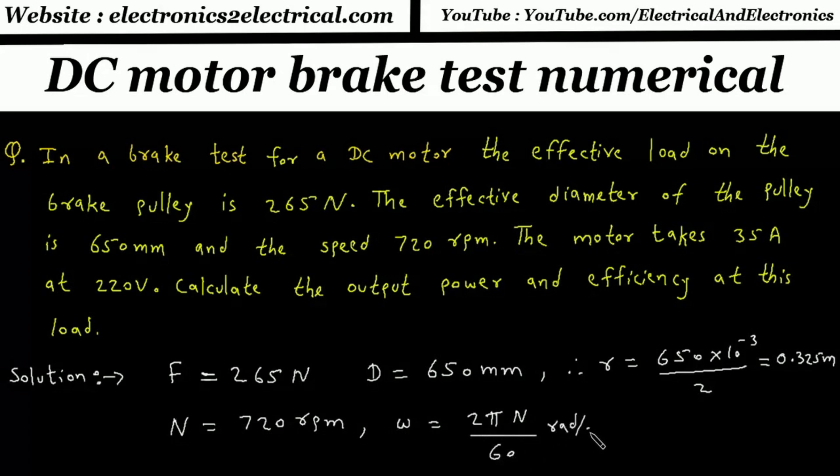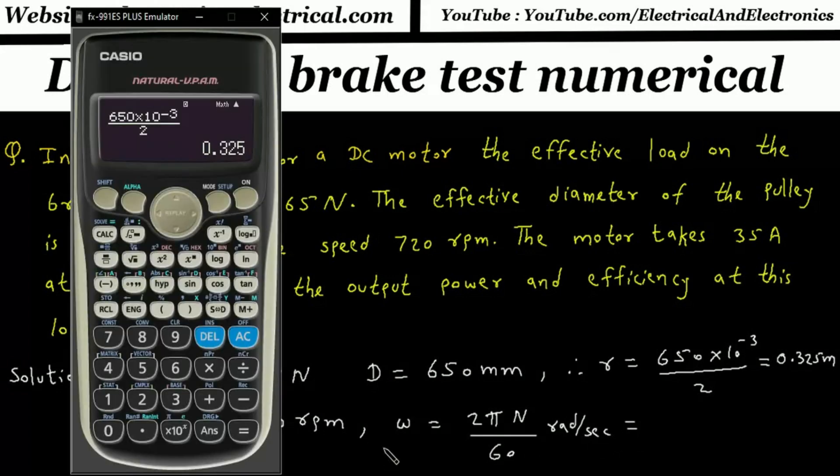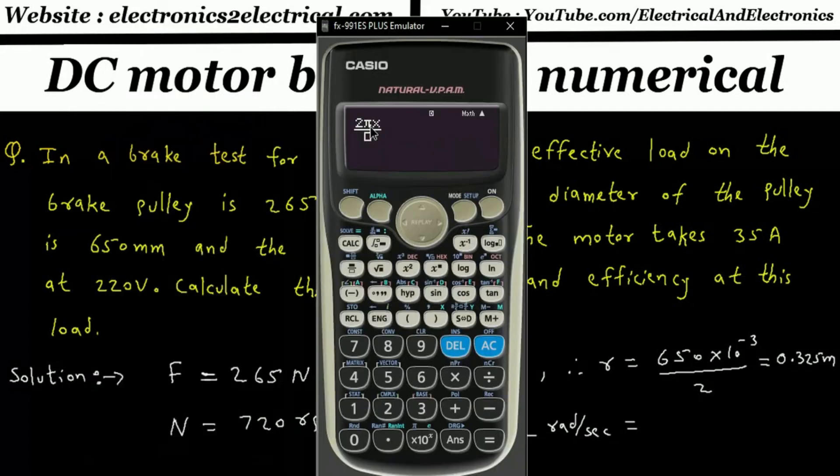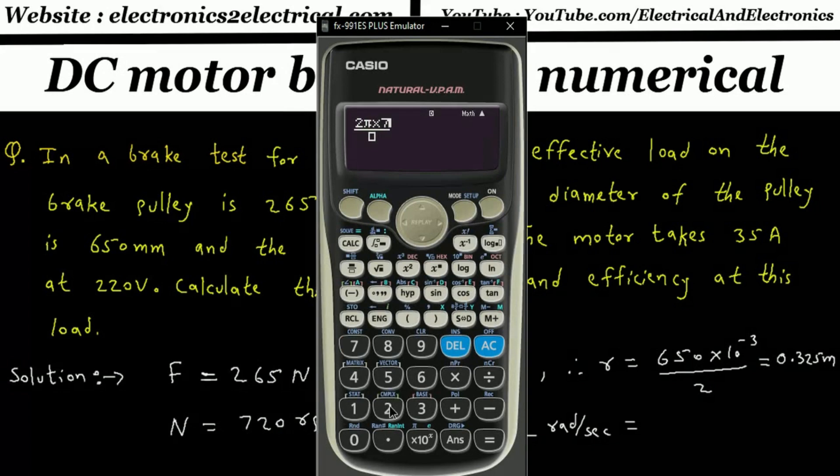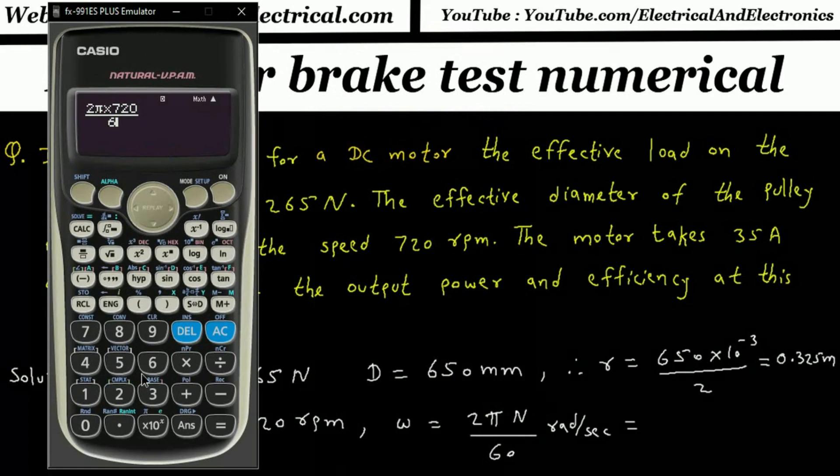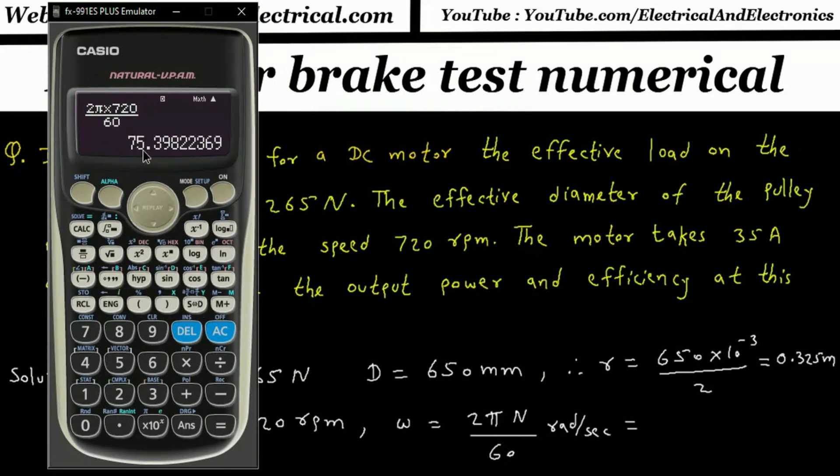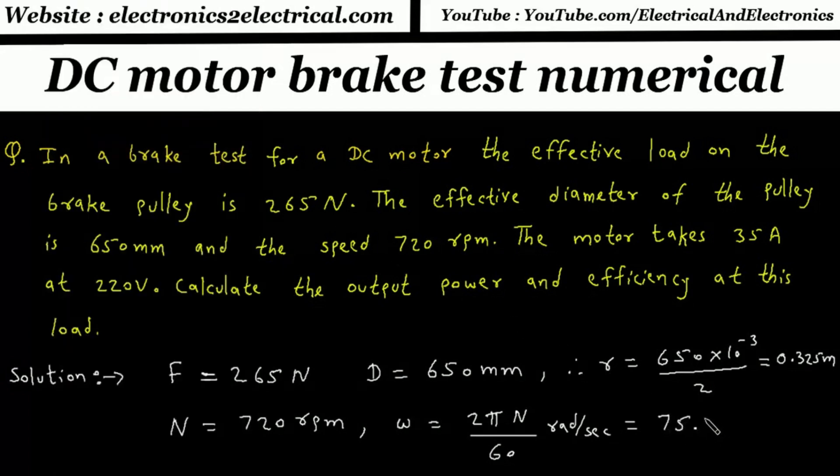So this will be 2 pi times 720 divided by 60, which equals 75.39 radians per second.